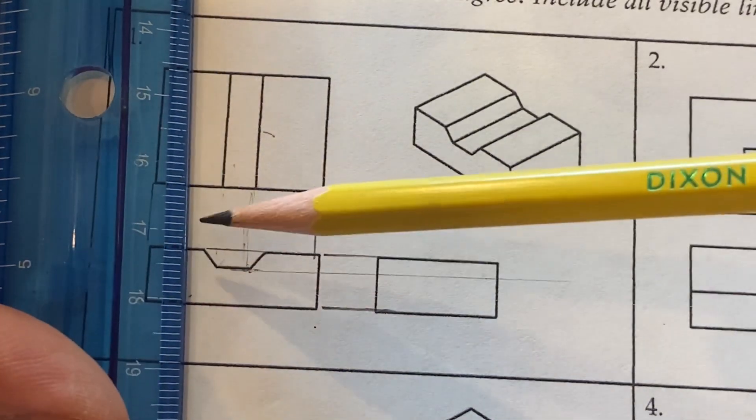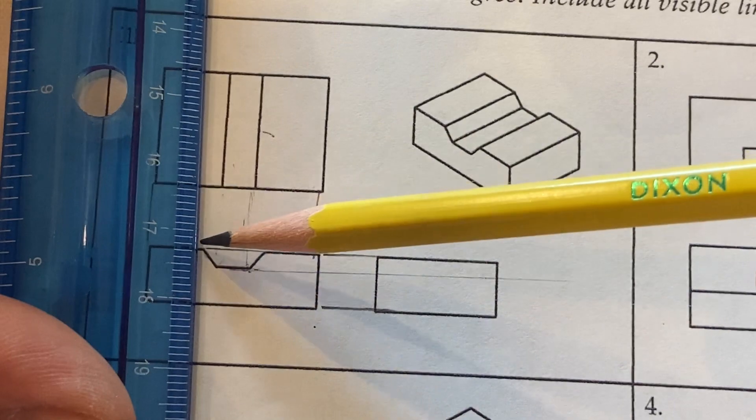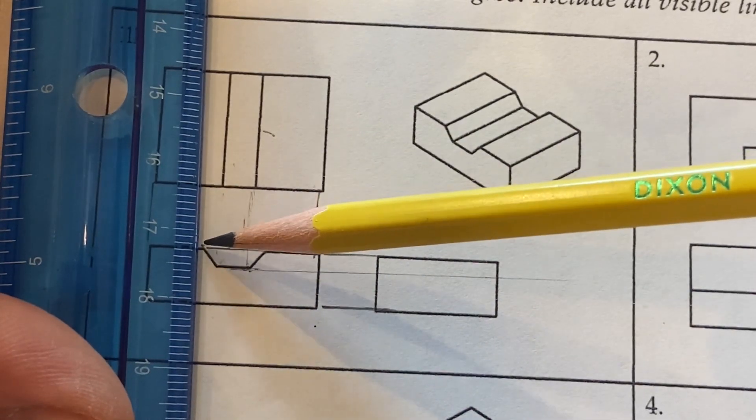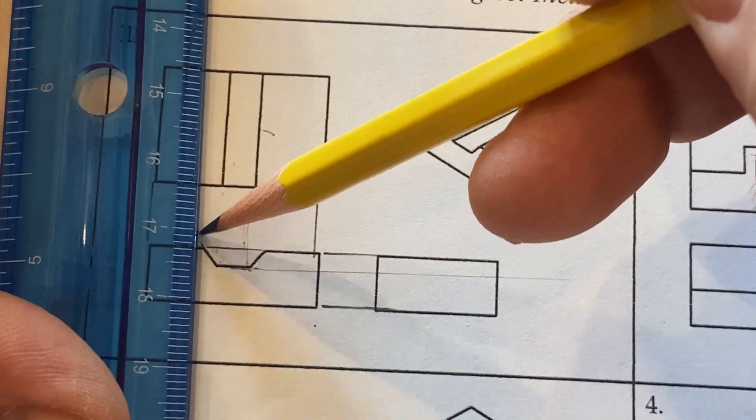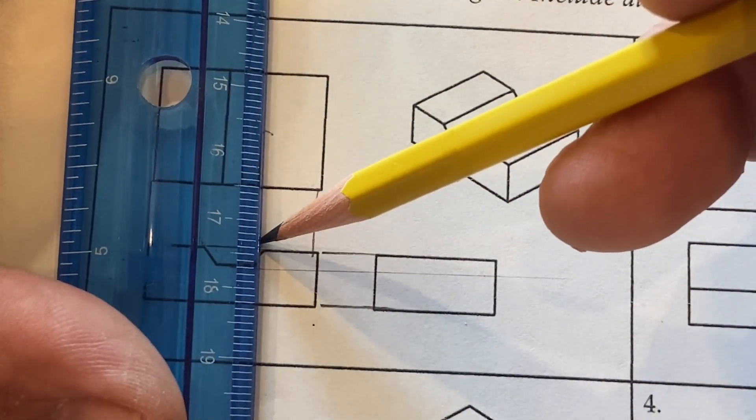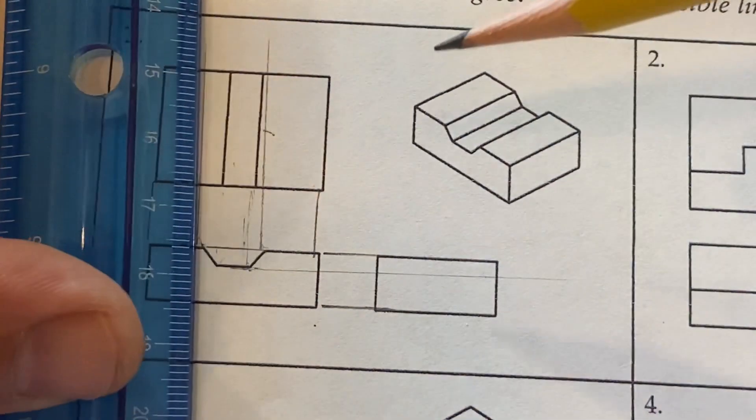But we don't have a line that's represented from here. So we also have this intersection point. So we're going to project that line up and this intersection point here will be projected up as well.